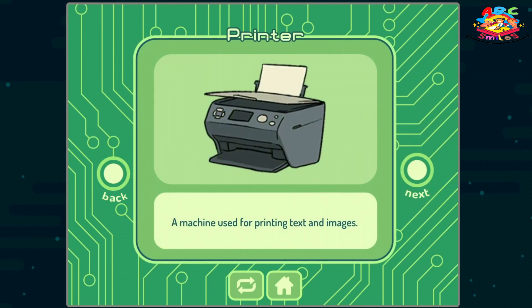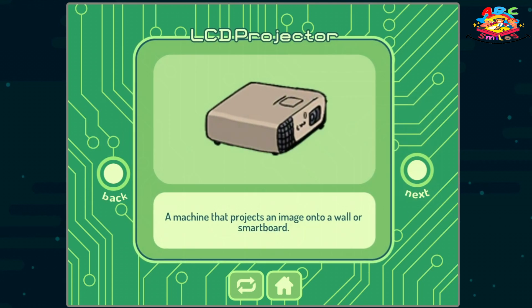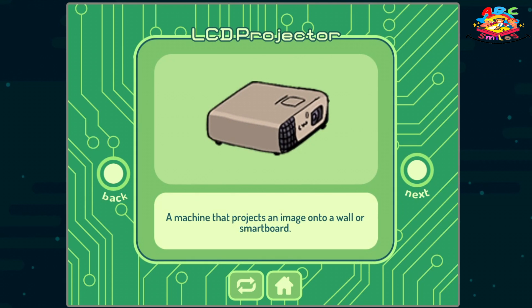Printer: a machine used for printing text and images. LCD projector: a machine that projects an image onto a wall or smart board.